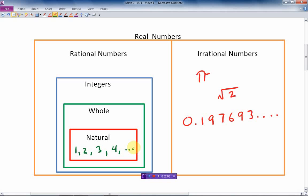The whole numbers, which is the next set of numbers, is exactly the same as the natural numbers except for one thing. We add zero. By adding zero, we now call this the whole numbers.